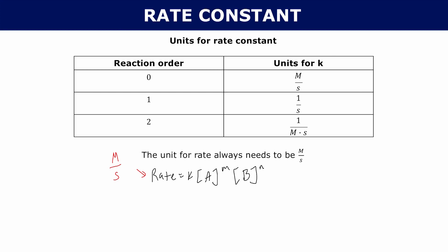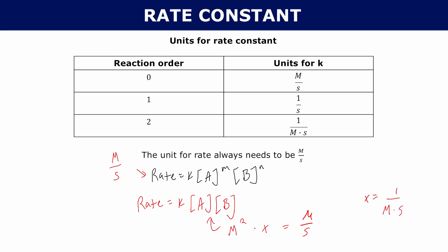For example, if m and n are both one, your rate equals k times concentration of A times concentration of B. That product has units of molarity squared. You need a unit for k such that molarity squared times that unit gives you molarity per second — so k's units come out to 1 over molarity per second for a second-order reaction.